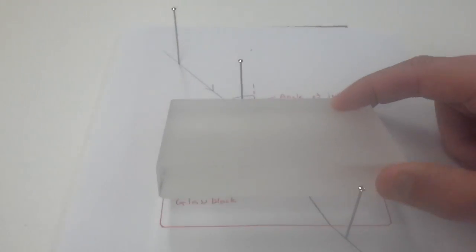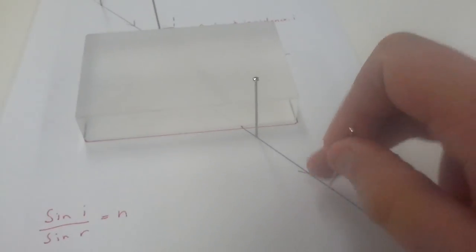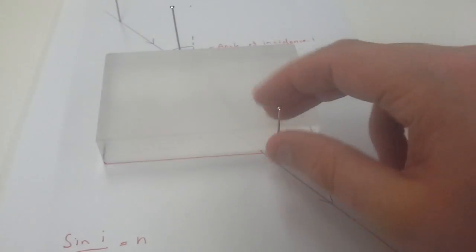I've got here a glass block and I've drawn around it. This piece of paper is on a cork board. I'm just going to take these pins out because we don't need them just yet, but I'll explain why the pins are there in a second.